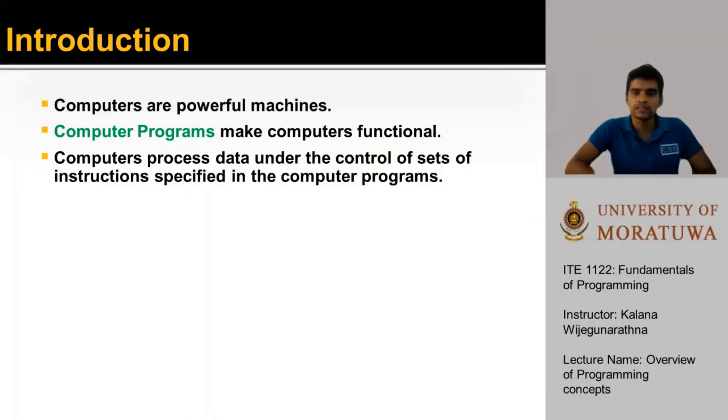Computers are powerful machines that can process a lot of data much faster than we humans can. But what is it that makes these computers function? Computers process data under the control of sets of instructions called computer programs. These computer programs make computers functional. Programmers write these programs specifying the functionality of the computer.